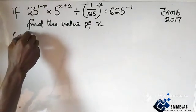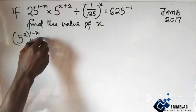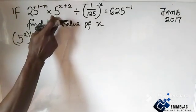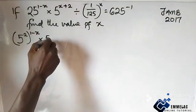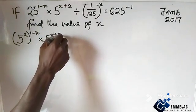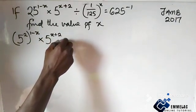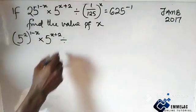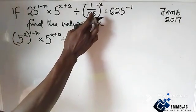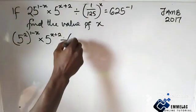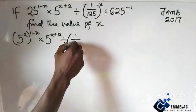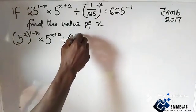We have 5 raised to power 2, into 1 minus x. The next term is already reduced, so we have 5 raised to power x plus 2. Then divided by — resolving to a base of 5 — we have 1 over 5 raised to power 3, or raised to power x.